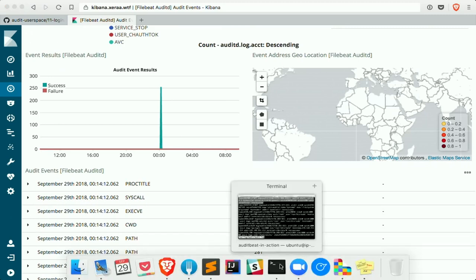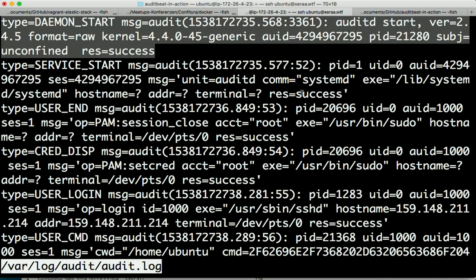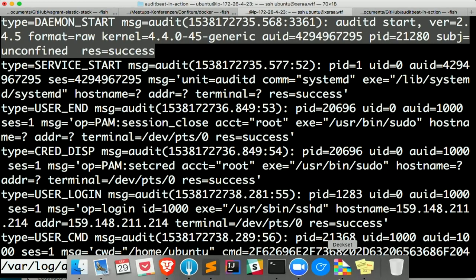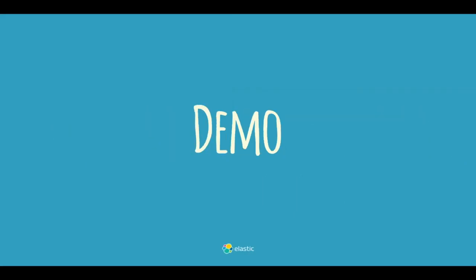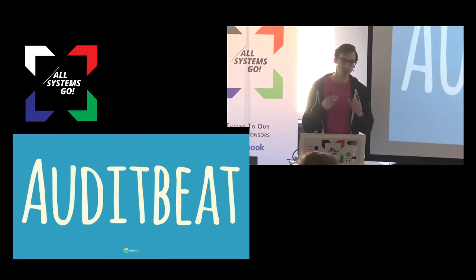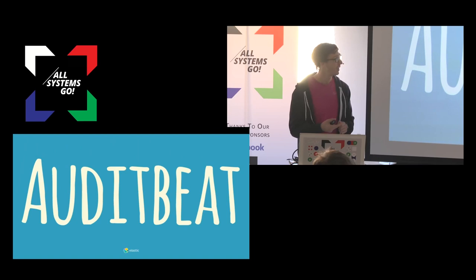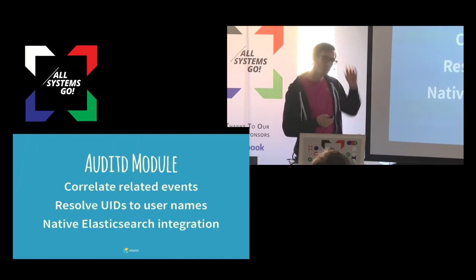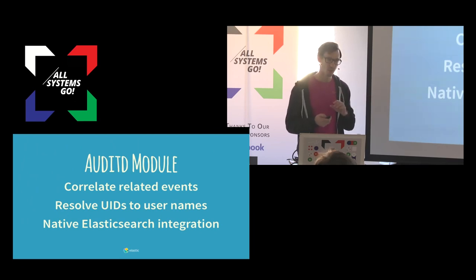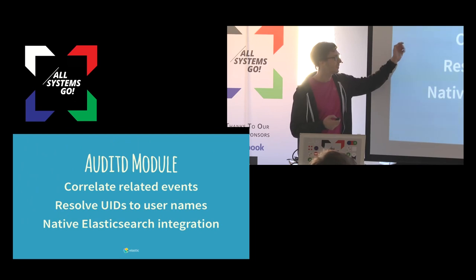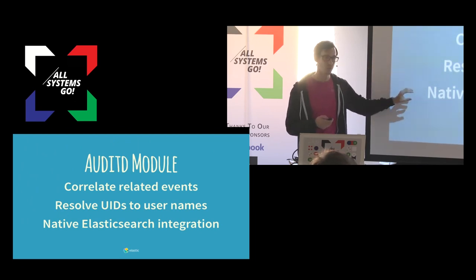The problem is that the auth log is a pain to parse, because every line looks different and has a different number of elements. At some point we were frustrated by how hard this was, and we rewrote this entire thing. We wrote a more specialized Beat. A Beat is a lightweight agent or shipper, and we have various Beats for different purposes: FileBeat to tail log files, MetricBeat for system and application metrics, PacketBeat for network data, HeartBeat for pinging, and AuditBeat for anything security related.